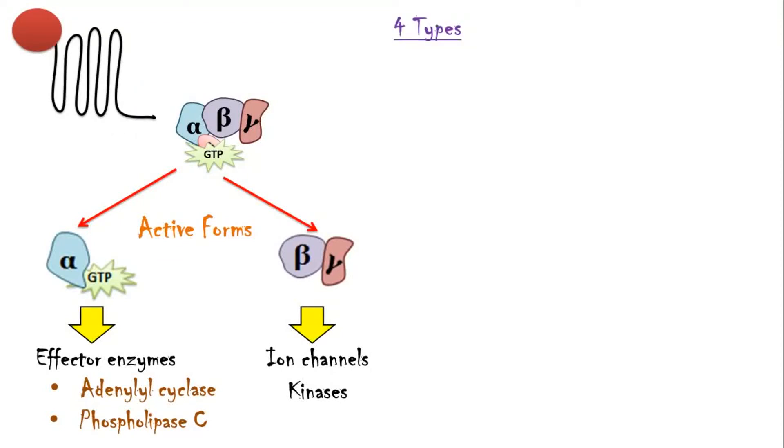There are four types of pharmacologically important G-proteins that have been identified. They are G-stimulatory, G-inhibitory, G-node and G-q-proteins.